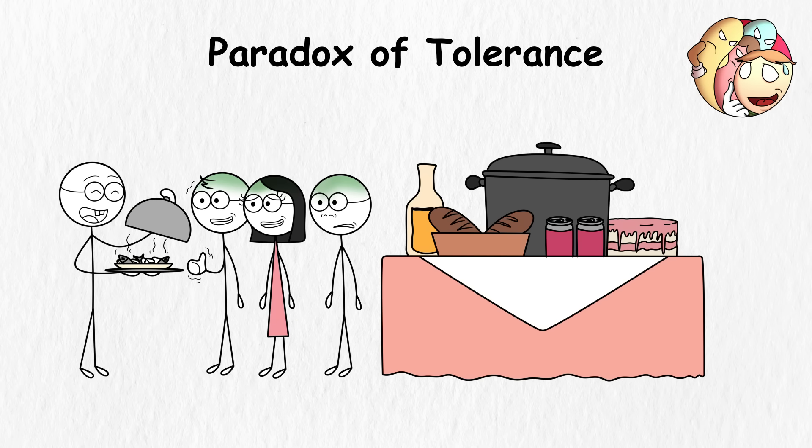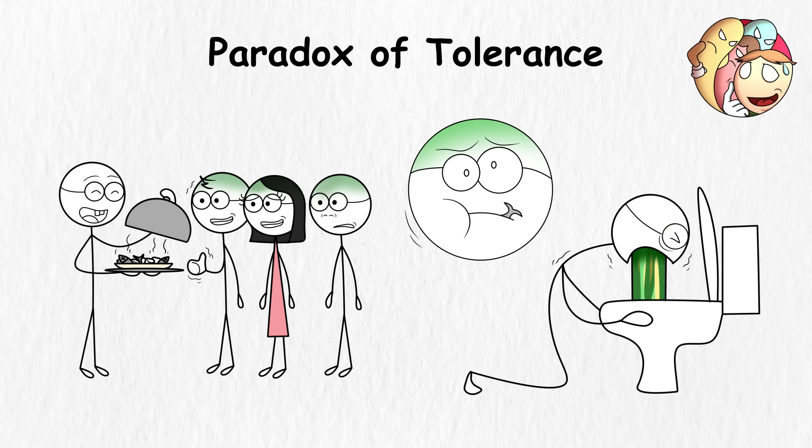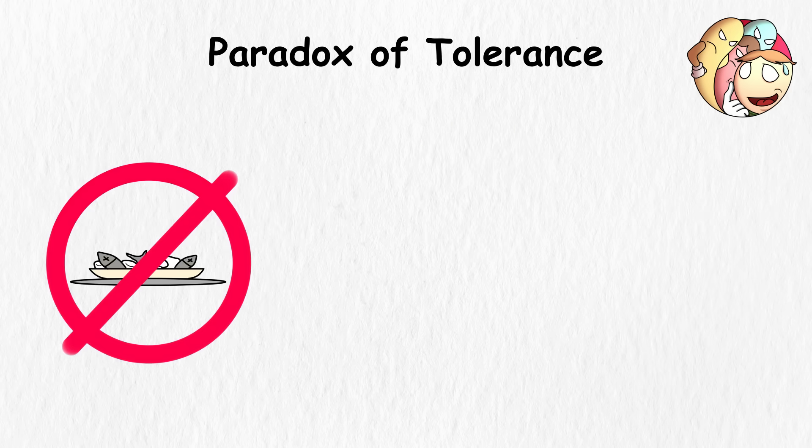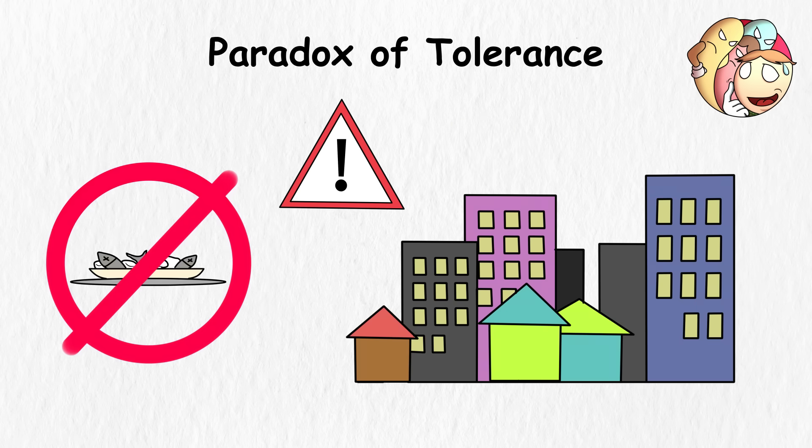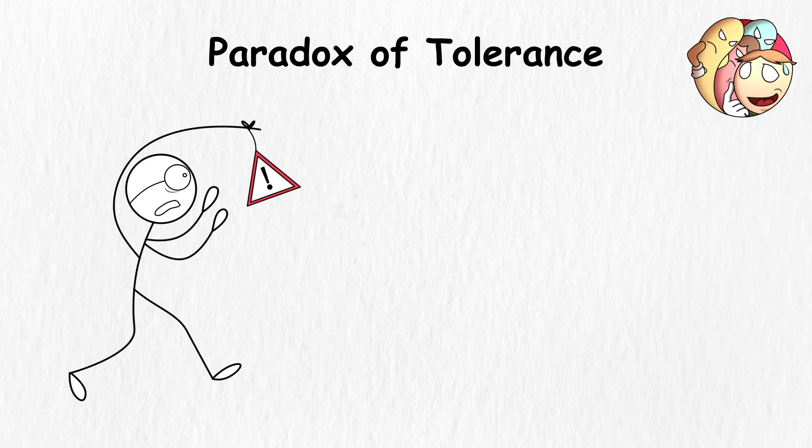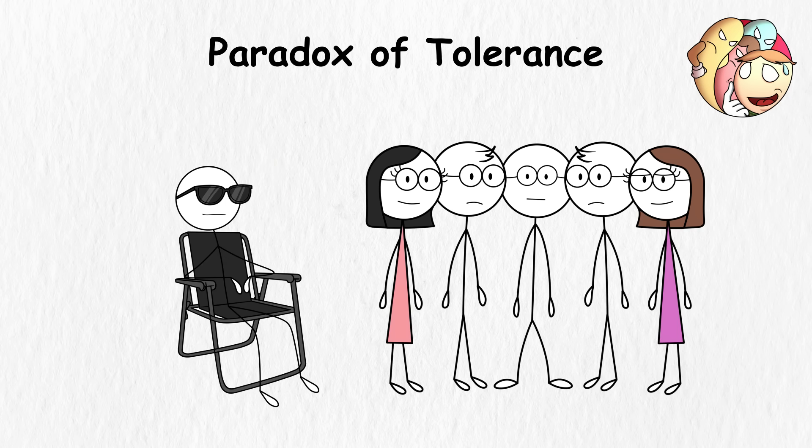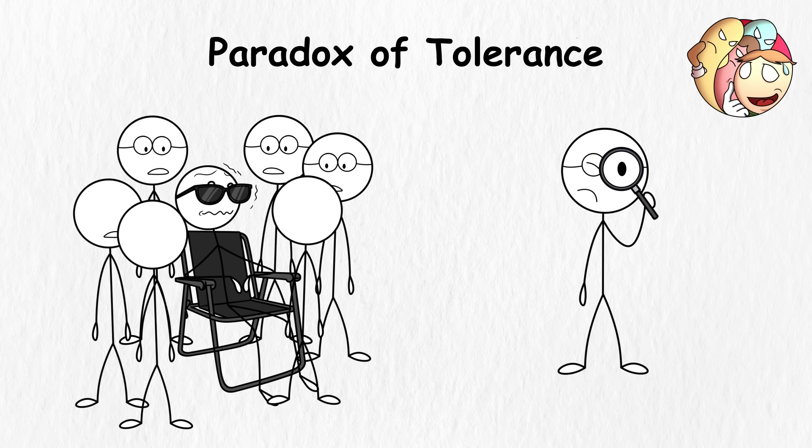Usually, in a perfectly tolerant society, you'd allow that guy to bring his unappealing food and eat it, but the dish is so disgusting that it shouldn't even exist. The Paradox of Tolerance warns that if a society is overly tolerant by allowing all ideas without limit, it risks being overtaken by people who exploit that tolerance. Simply put, if you're too chill about everything, you might find yourself in a chilling situation where people abuse your tolerance for everything.